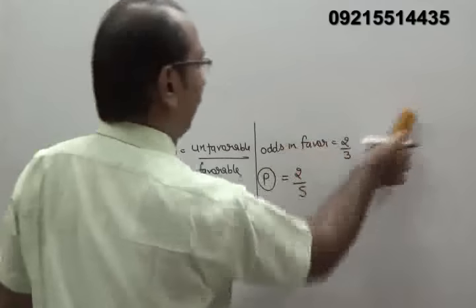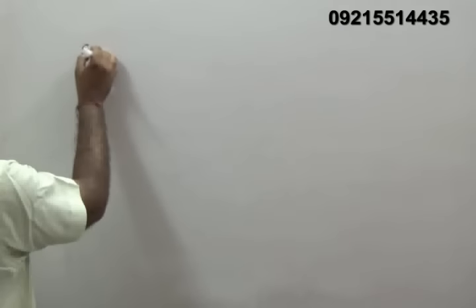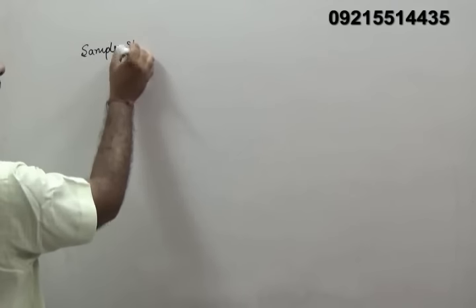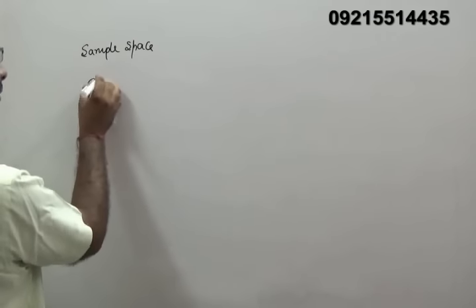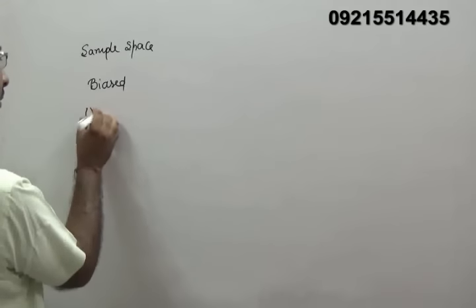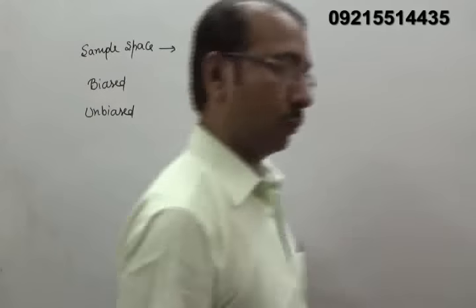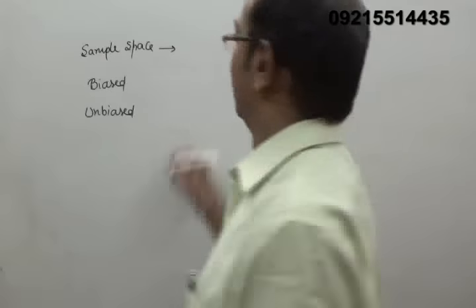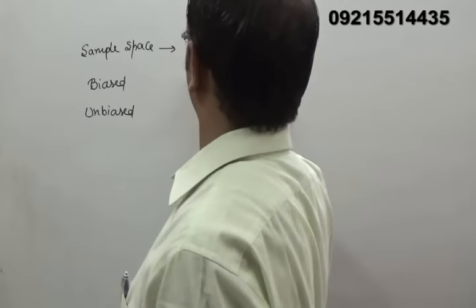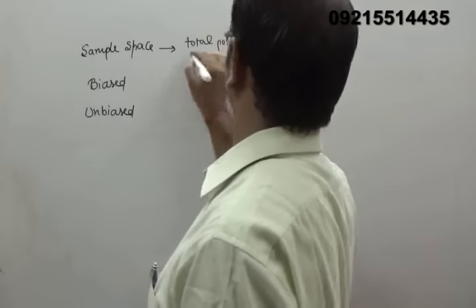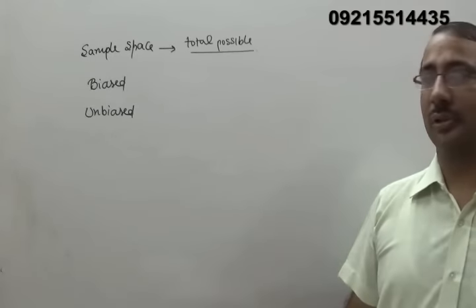After understanding favorable cases, probability, odds in favor, and odds against favor, the next point is some specific terms. The first term is sample space, which means total possible outcomes. For example, when a dice is thrown, the total possible outcomes are 1, 2, 3, 4, 5, 6 — those constitute the sample space. We also have two types of events: biased and unbiased.